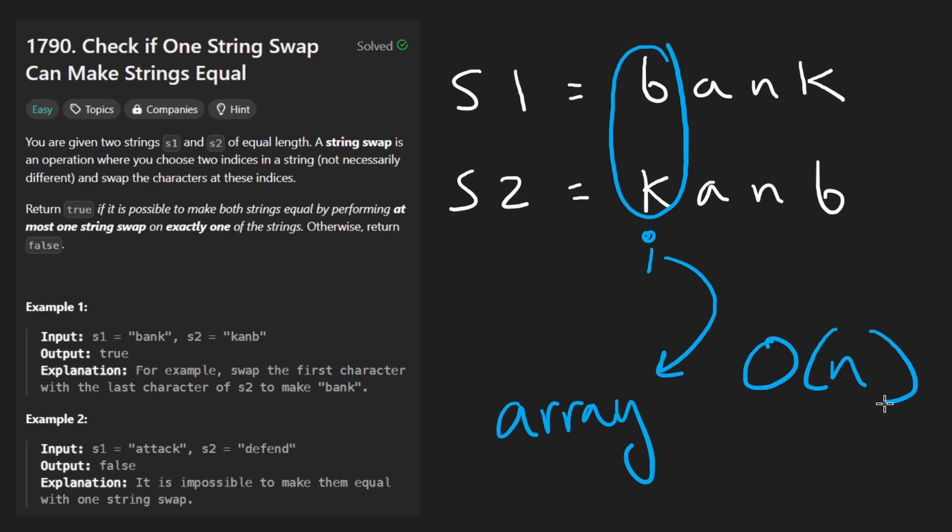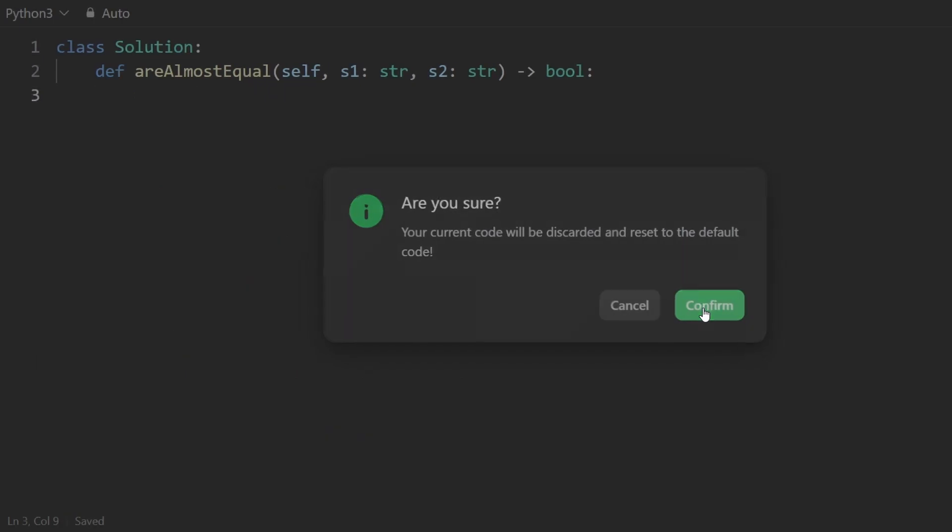You're probably thinking if I have an array isn't that going to also be linear space? No it's actually going to be constant space and I'll show you why in just a second. So let me clean this up.